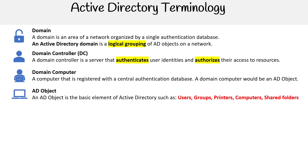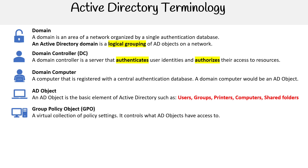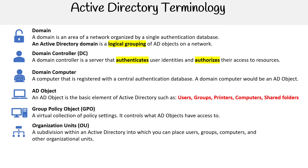We have Group Policy Objects, or GPOs — a virtual collection of policy settings that controls what AD objects you have access to. You also have Organizational Units, or OUs. These are subdivisions within Active Directory into which you can place user groups, computers, and other organizational units. OUs appear in many identity access management systems, so this is not a term specialized to Active Directory, but it's one of the earliest systems to adopt it.